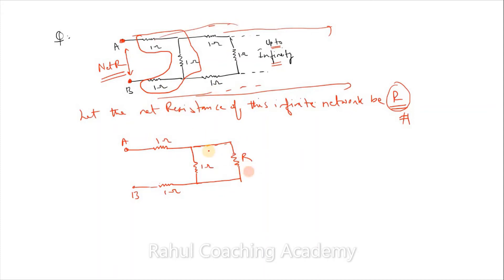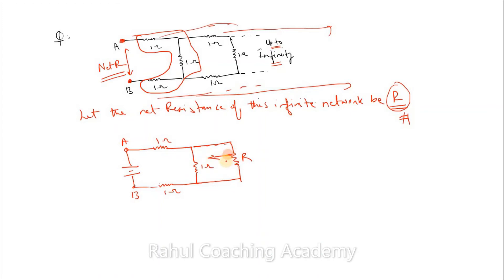I've added one more single branch — it won't make a difference because it was an infinite network. Now we solve this redrawn network. The terminal point is here, so if a battery is connected, these two resistances will actually be in parallel to each other.